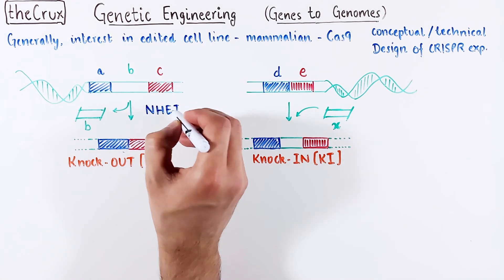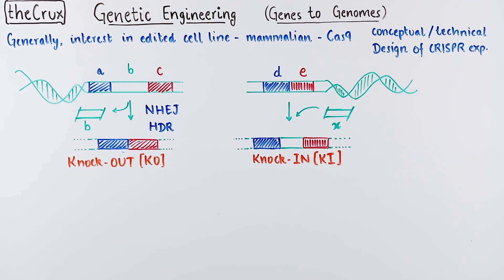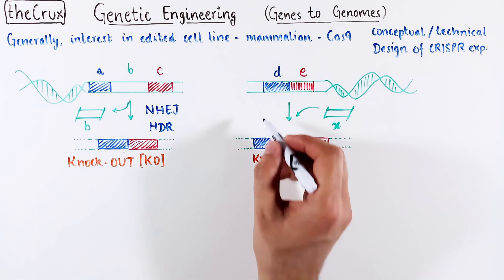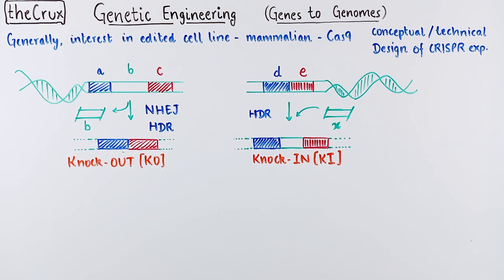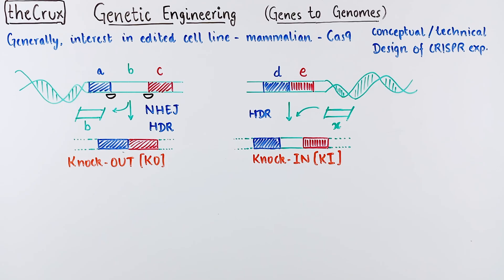Deletion knockout typically relies on end joining repairs, but you can also do HDR-based knockouts. On the other hand, knock-ins primarily rely on HDR repair pathway. For deletions, you need two separate Cas9s, whereas insertions can be done with a single Cas9.